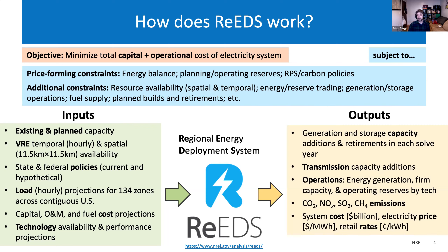The key outputs are, first and foremost, the build-out of the system — what portfolio of generation and storage technologies are used to satisfy the constraints, including new capacity additions in different years as well as retirements. This also includes transmission capacity additions and information on how the system actually operates: when different technologies are generating energy, how much firm capacity each generator contributes, what technologies are providing operating reserves. The model also captures emissions for key pollutants — notably CO2, NOx, SOx, methane, and mercury — as well as total system costs, electricity price, and an option to estimate retail electricity rates.